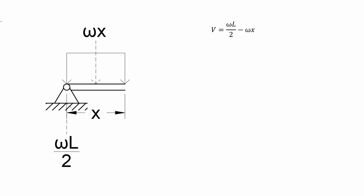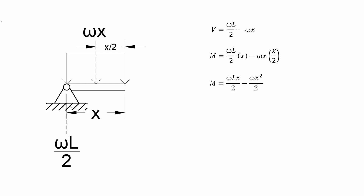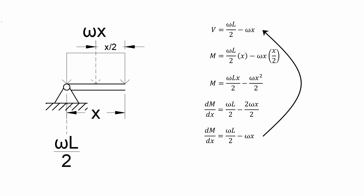To determine the equivalent bending moment at that section, we simply multiply the loads considered in solving for the shear force by their corresponding lever arm, or perpendicular distance from the section. Simplifying the equation, and then taking the derivative of this equation with respect to x, the result is equal to the equation of the shear force.